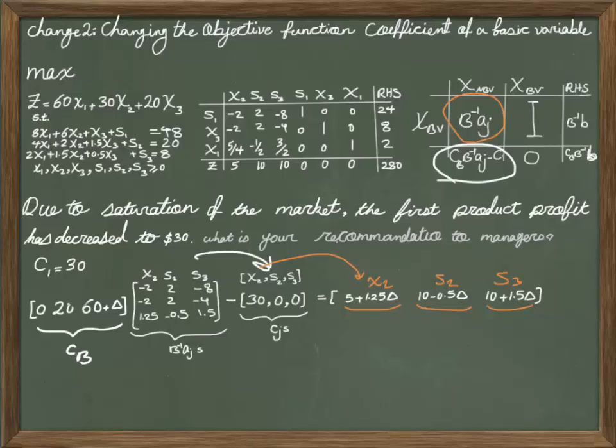Because if any of these become negative, then we have to continue the table by finding the most negative value in the row of Z, implementing the minimum test, and so forth.